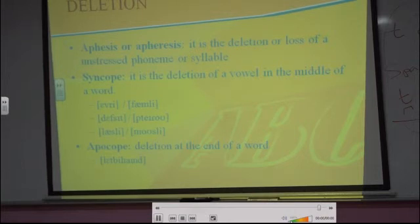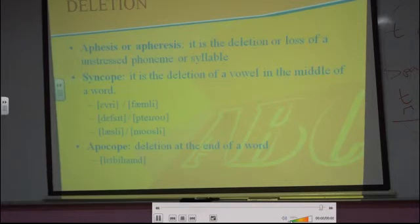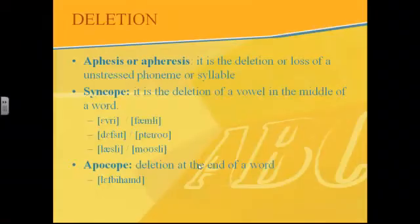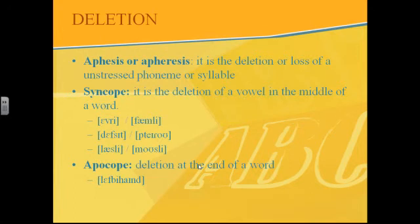Syncope is the deletion of a vowel in the middle of a word. For instance, we have the word 'every' — we don't say 'every,' English speakers say 'ev'ry.' Some people even delete syllables: 'probably' becomes 'prob'ly.' And 'family' becomes 'fam'ly.'